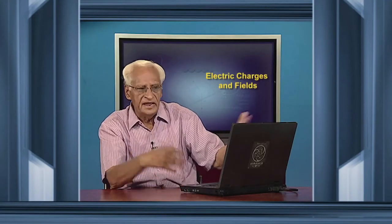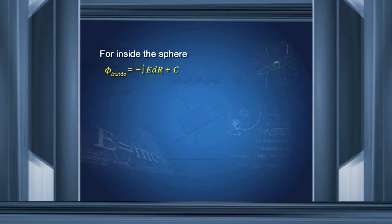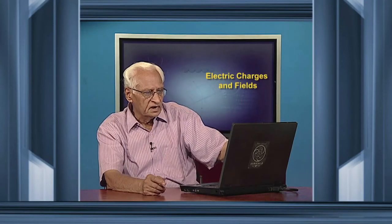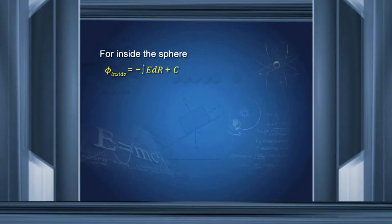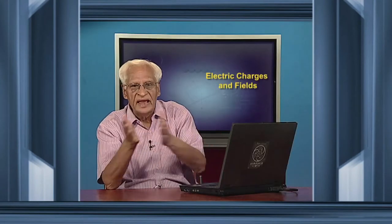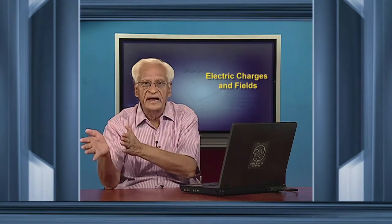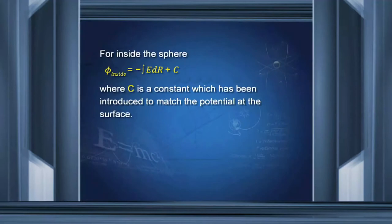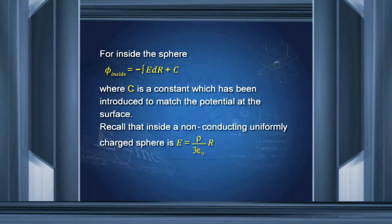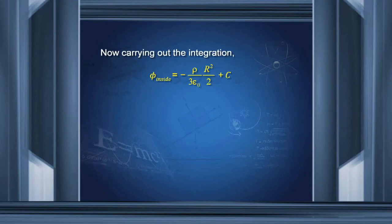For inside the sphere, again we use the same strategy of integrating E·dr. We substitute the value of E, which inside the sphere is ρ/3ε₀ times r, as we found in the last lecture. So φ inside is minus ρ/3ε₀ times r²/2 plus a constant C.